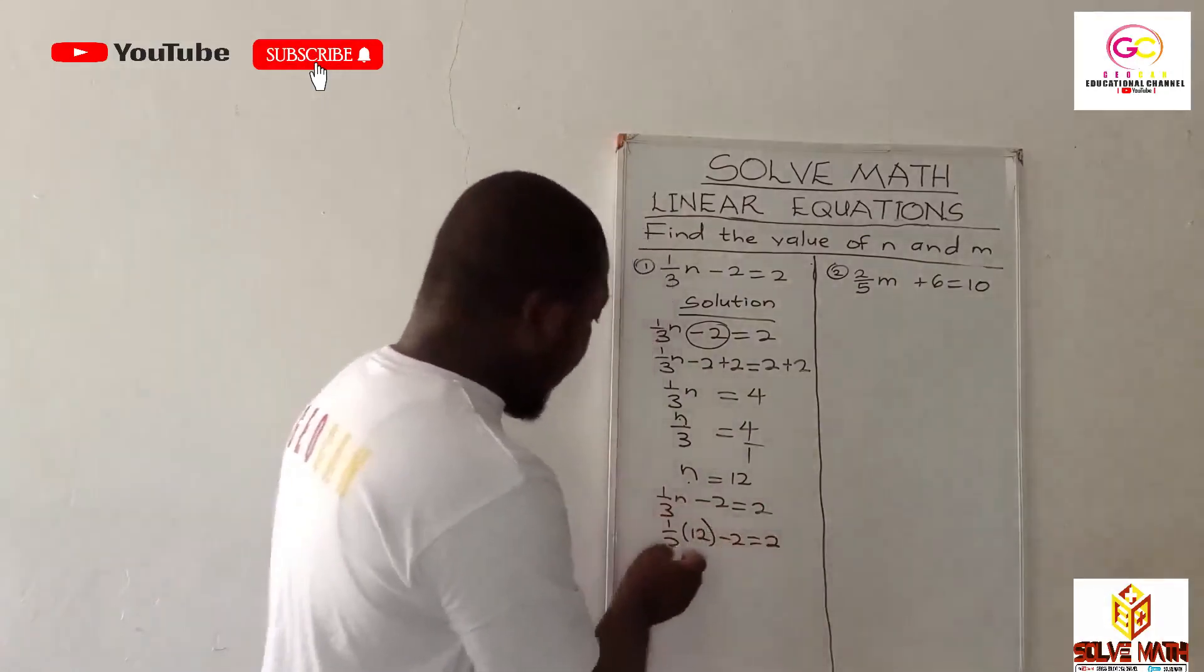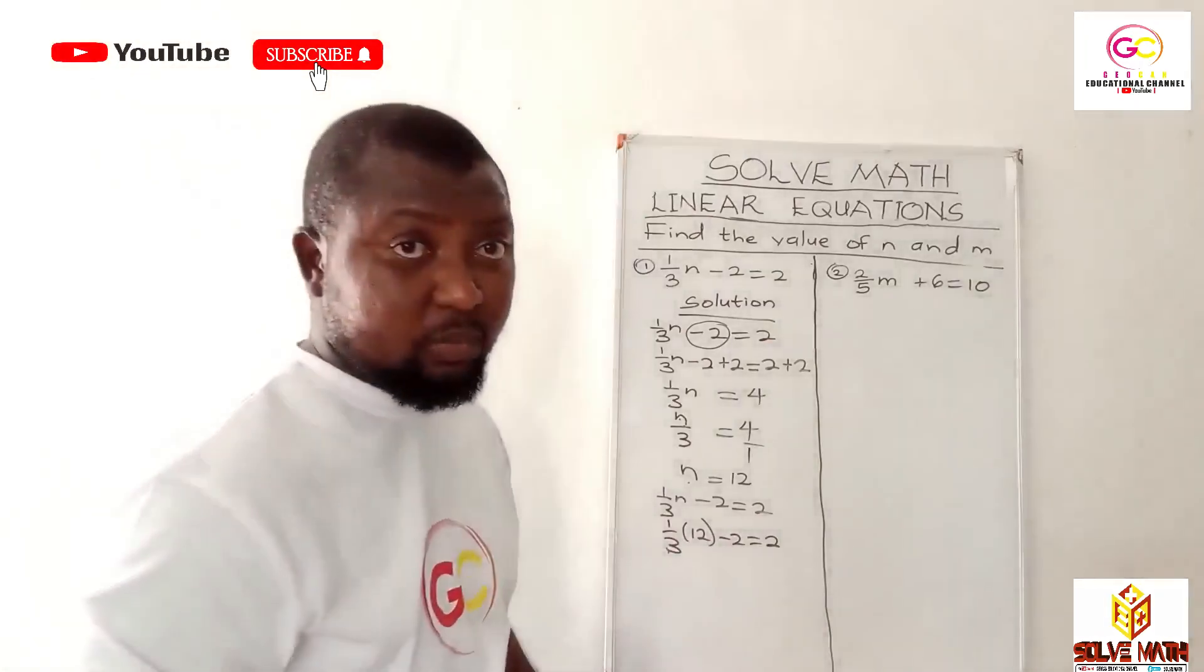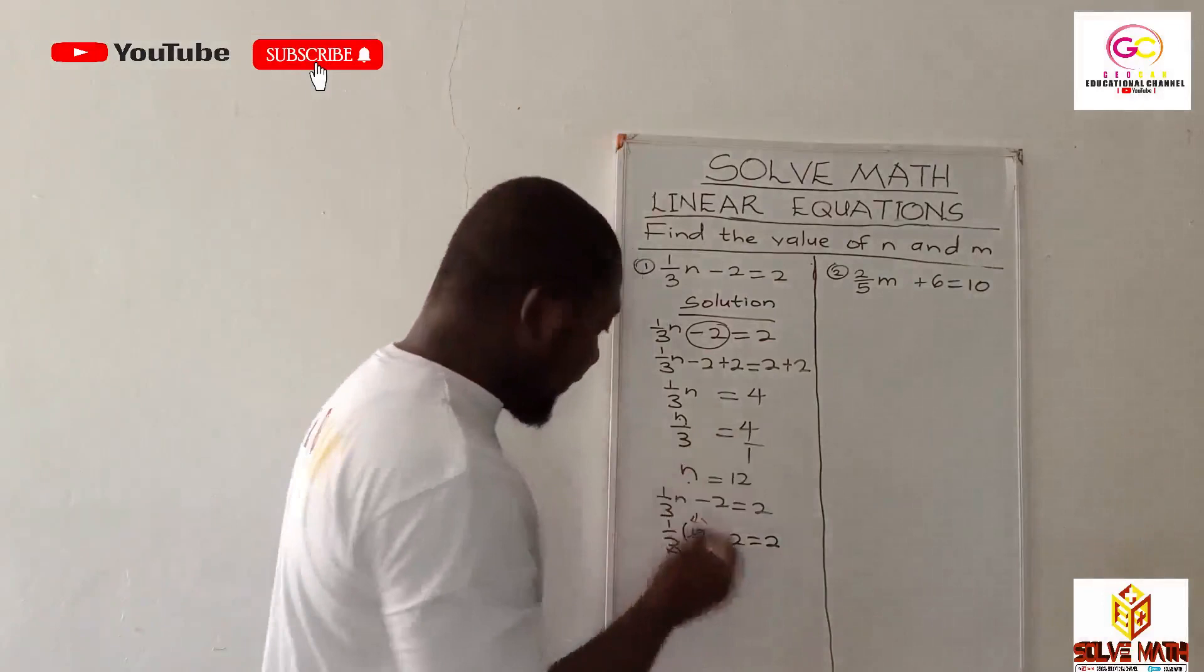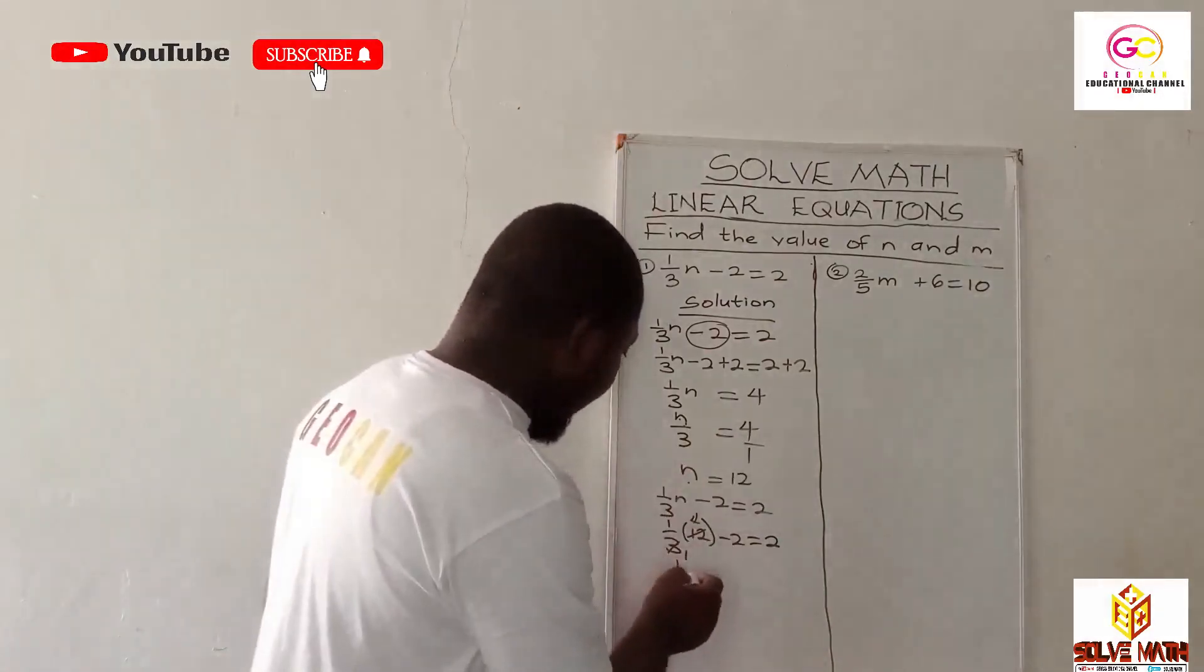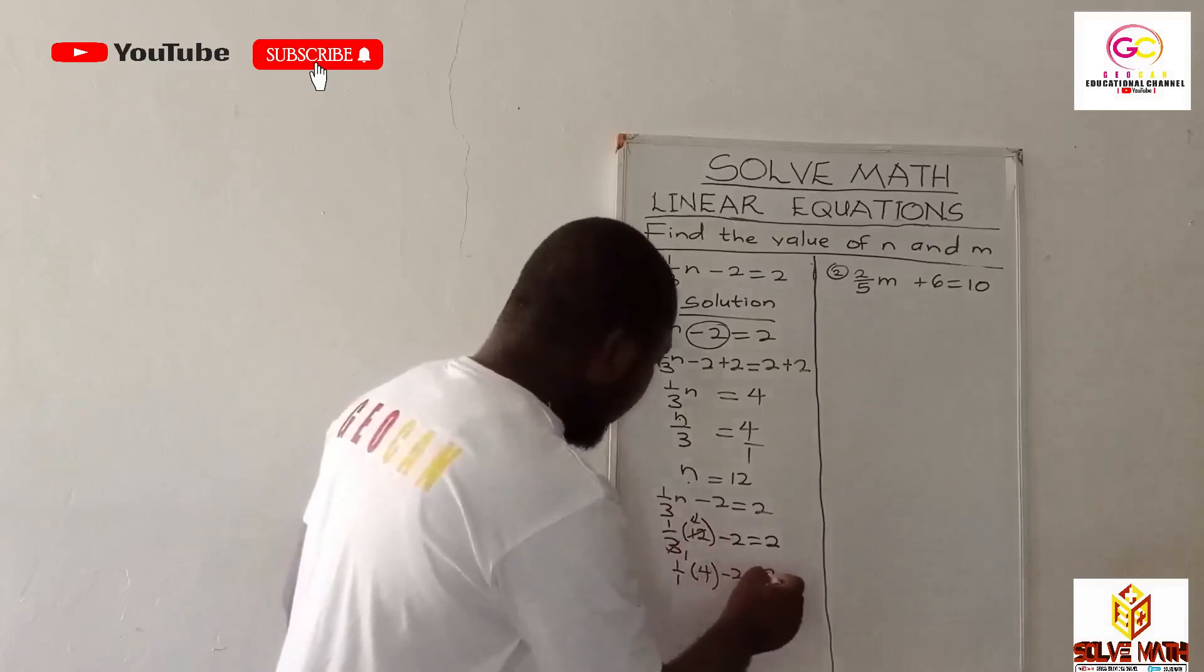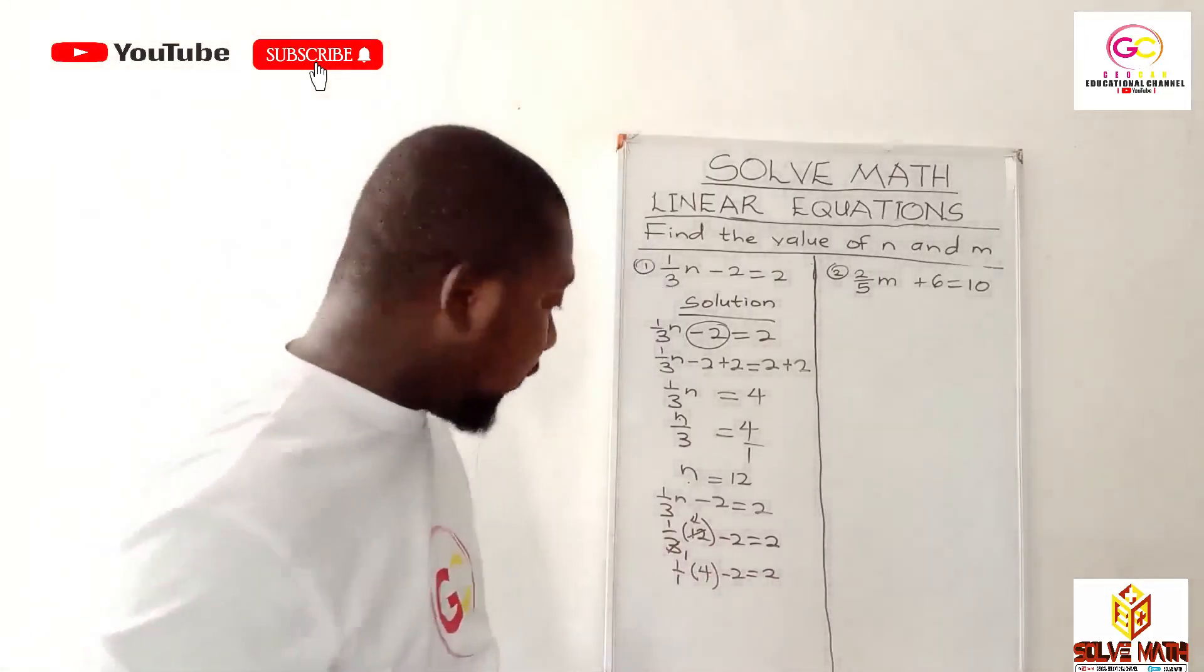Now three will go into twelve how many times? Three times four is twelve. Twelve divided by three is four. So now you'll be left with 1/1 × 4 - 2 = 2. Take your time and solve it.